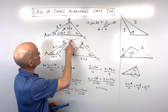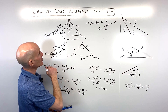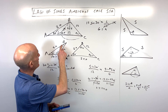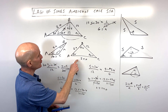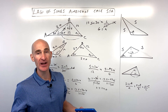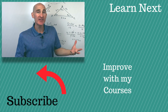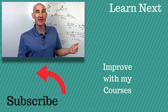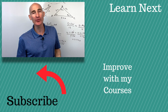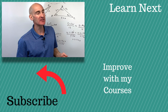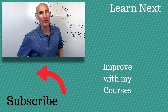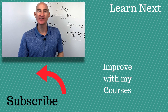We had two measures for angle C, two measures for angle B, and two lengths for side B. If you want to see more about the Law of Cosines and how to work with it, follow me over to that video where we dive into more examples.